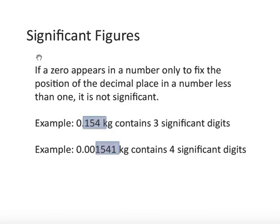Here's a rule: if a zero appears in a number only to fix the position of the decimal place in a number less than one, it is not significant. For example, 0.154 contains three significant digits — the 1, 5, and 4. The zero is just there because of the unit chosen, kilograms in this example. Similarly, 0.00154 contains three significant digits, and 0.001541 contains four significant digits. These leading zeros are only placeholders — they are not significant.